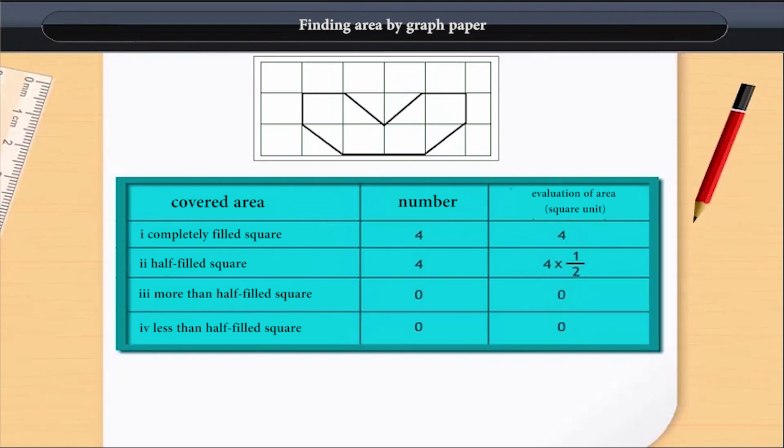Here too, the number of squares filled more than half and less than half are not much. Now, as per convention, we take the area of a complete square as 1 square unit.